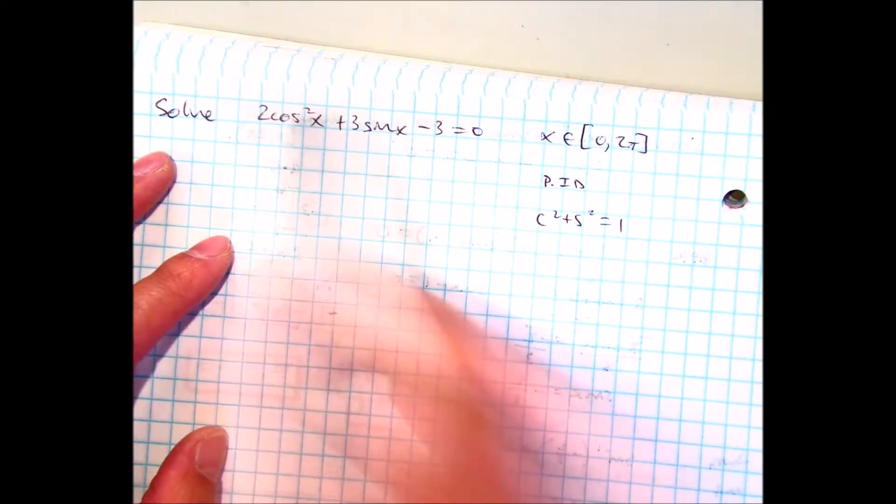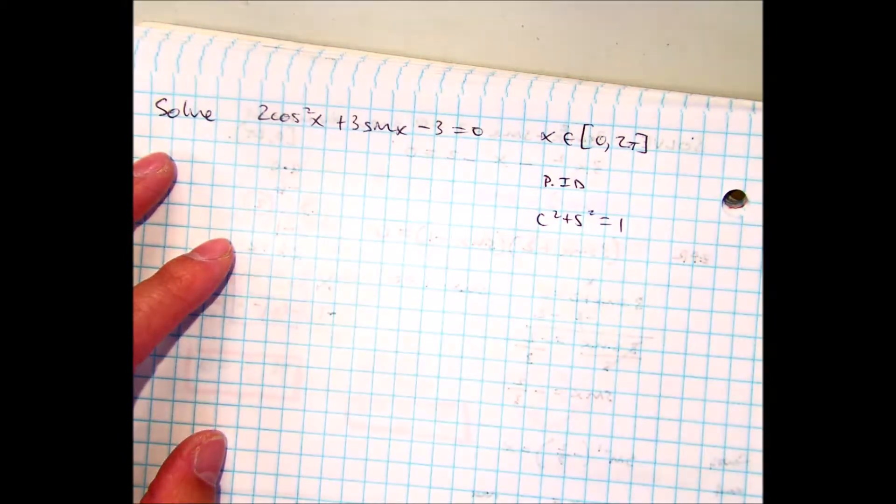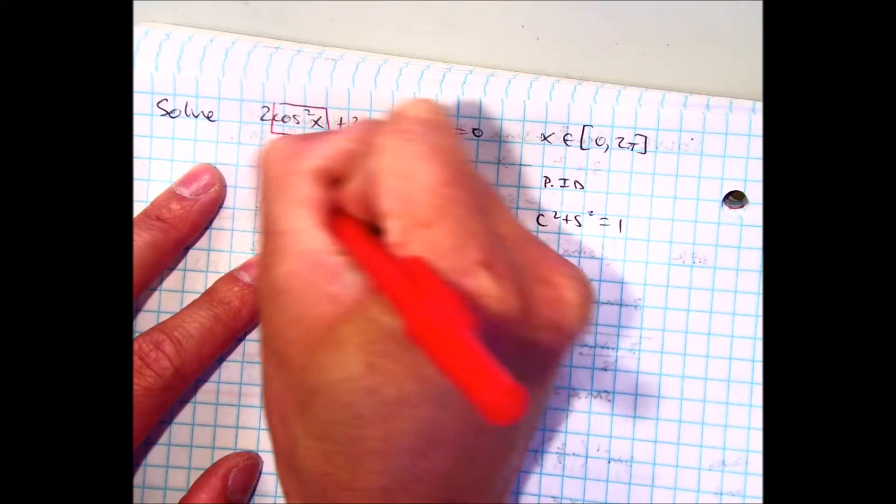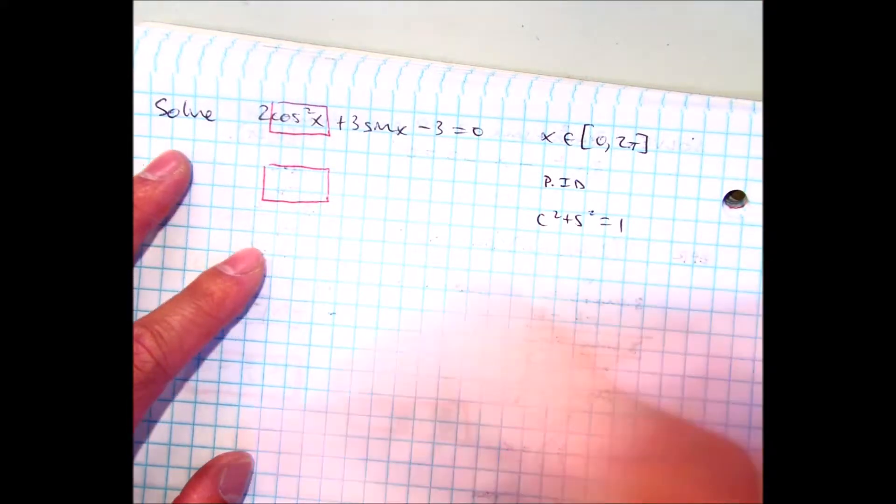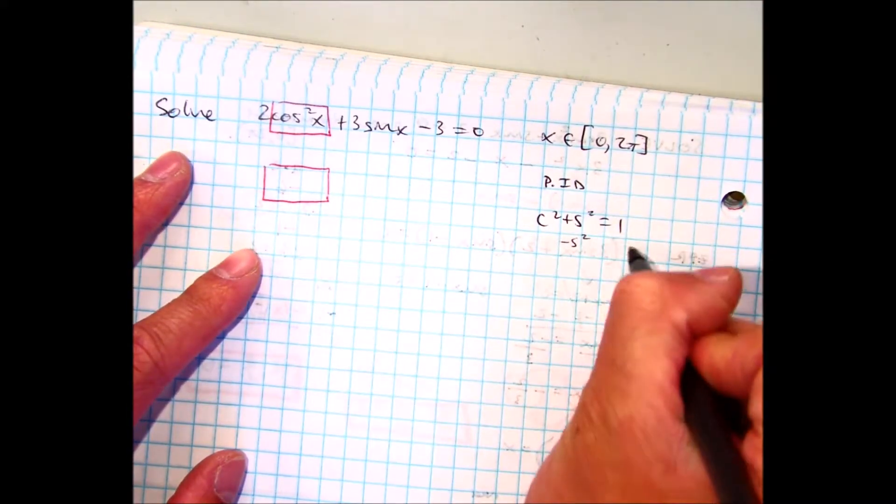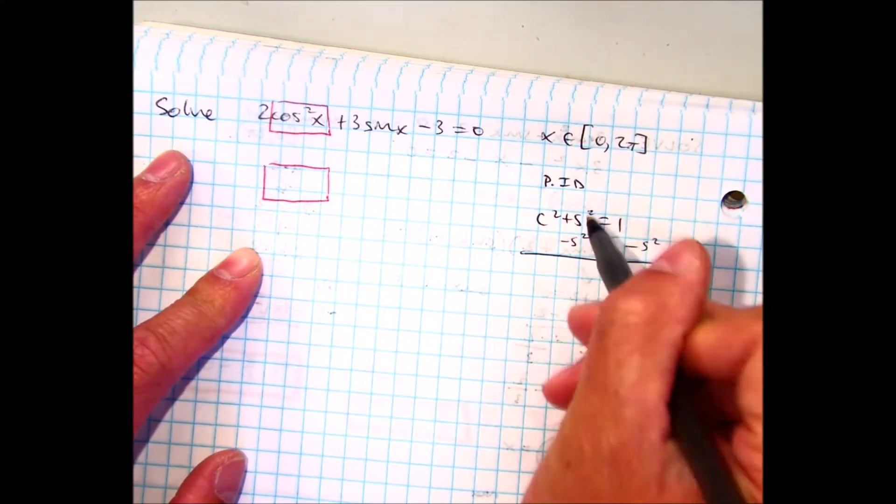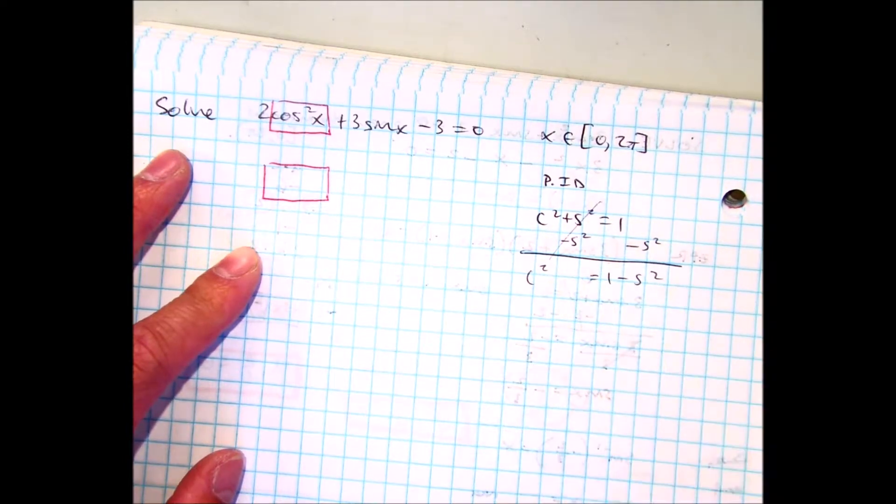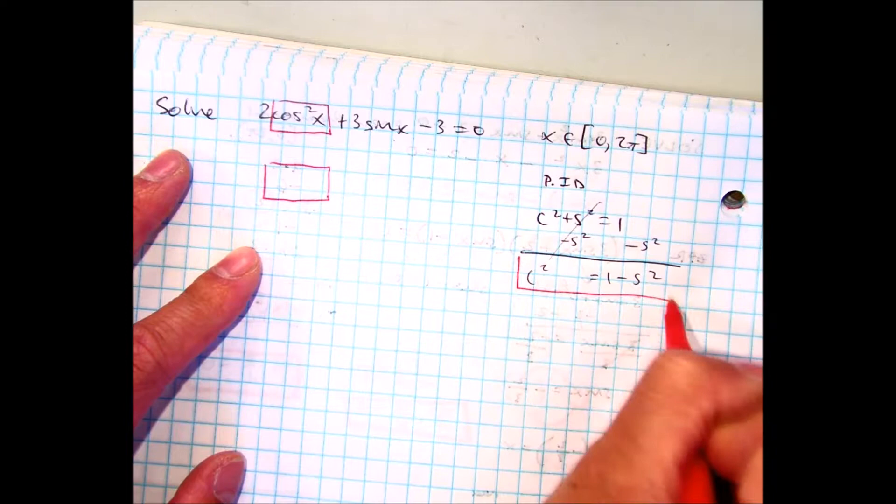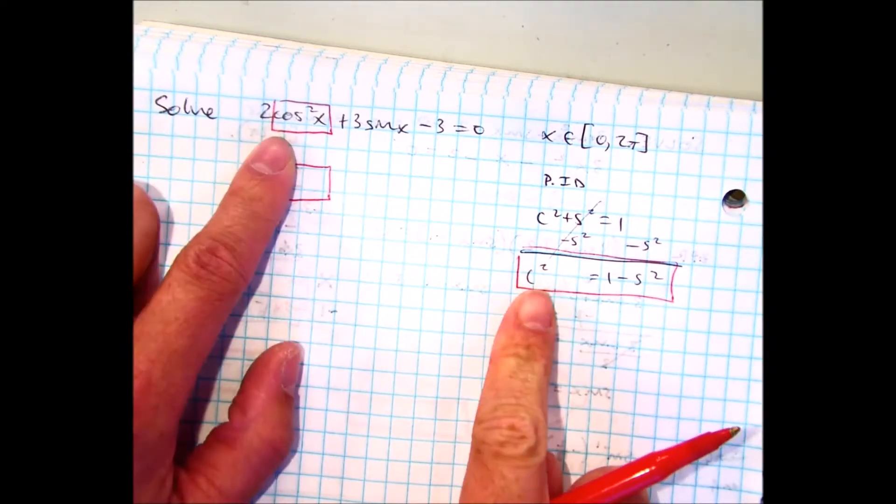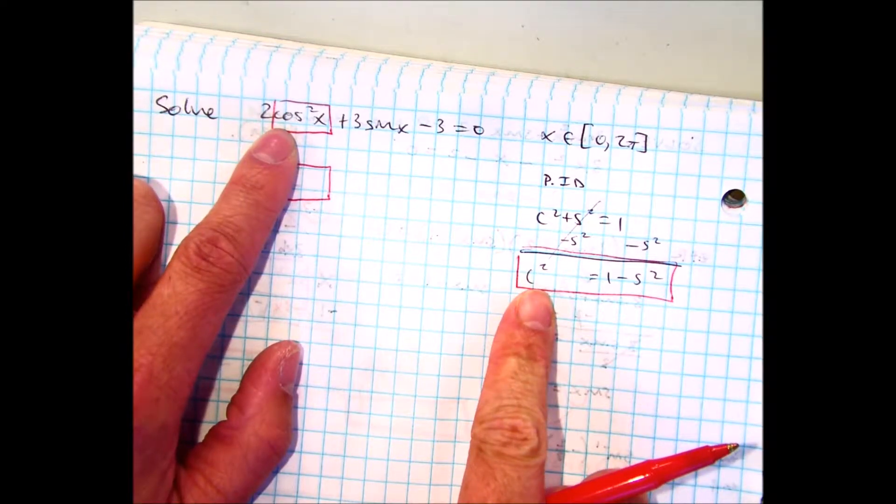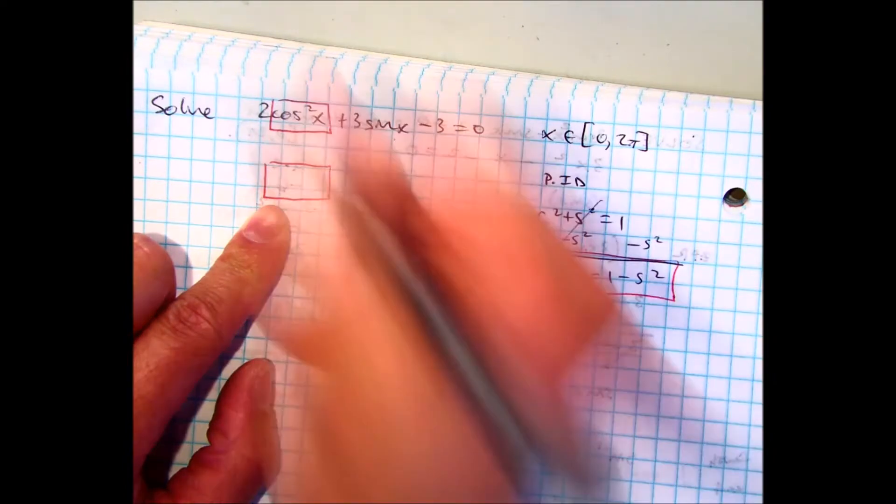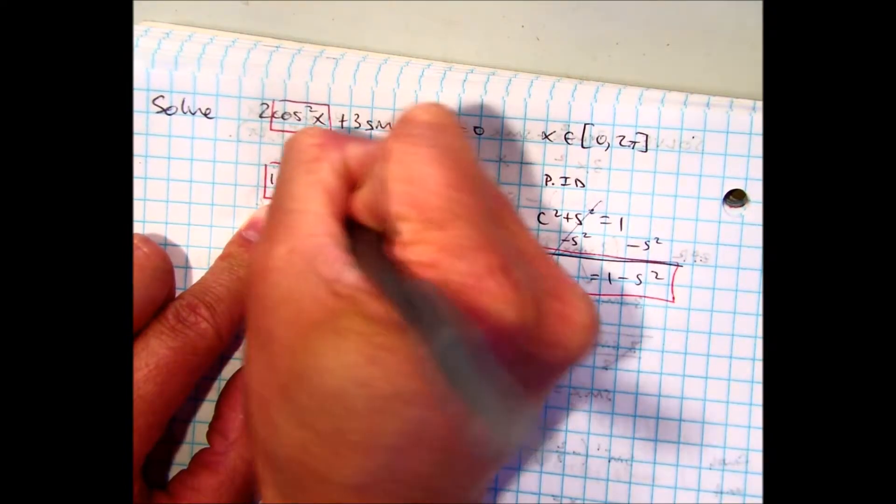And if I look at these, I know that this one is the one that has the power of 2. So basically, I want to get cosine squared x equal to something. So over here, I can just subtract. From here, I get cosine squared equals 1 minus sine squared, and that's my substitution. Every time I see cosine squared x, I'm going to write 1 minus sine squared x. Write that, 1 minus sine squared x.